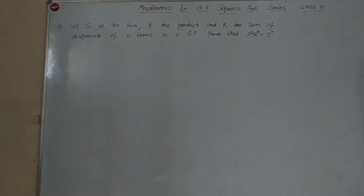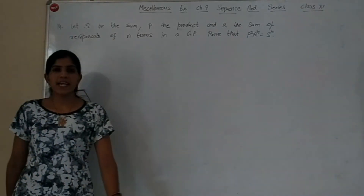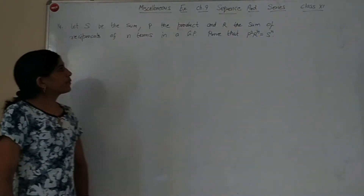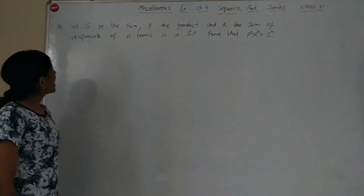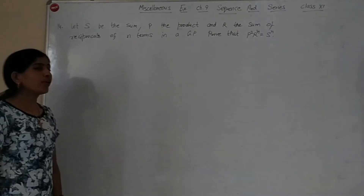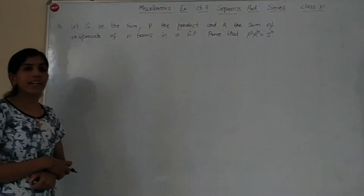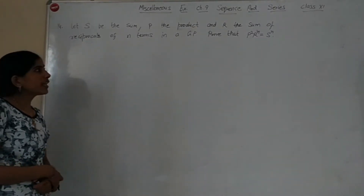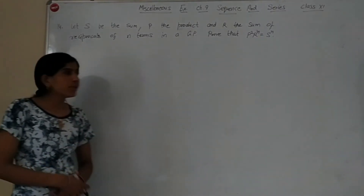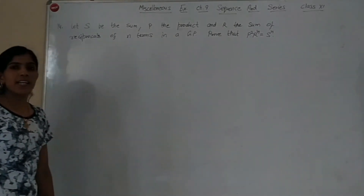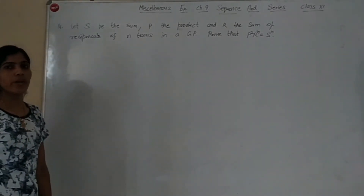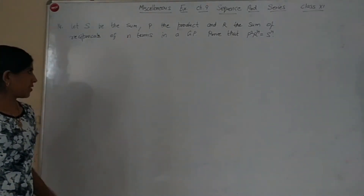The question for me is: let S be the sum, P be the product, and R be the sum of reciprocals of n terms in a GP. Prove that P squared times R to the power n is equal to S to the power n.